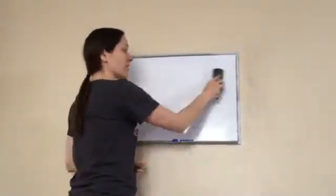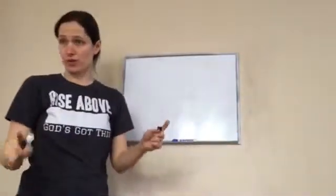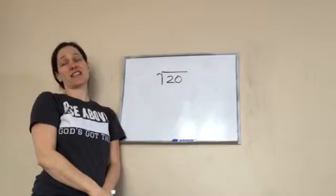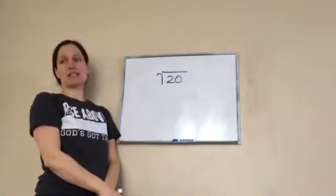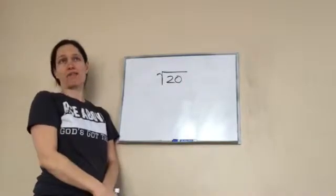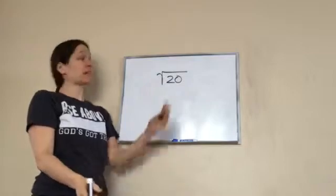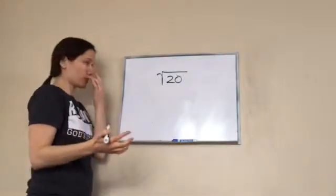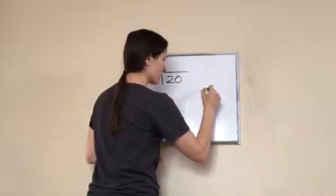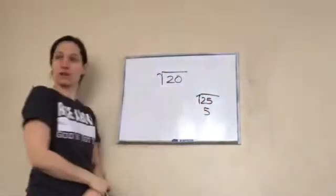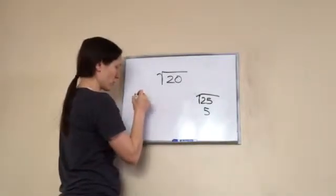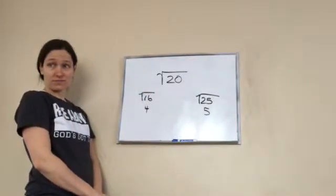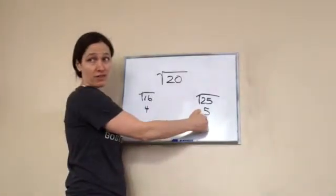But you're not always going to have perfect squares. Look at the square root of 20. 10 times 10 is 100, so we know it's less than 10. Let's try 5: 5 times 5 is 25 — too high. Let's try 4: 4 times 4 is 16. So the answer is somewhere between 4 and 5.